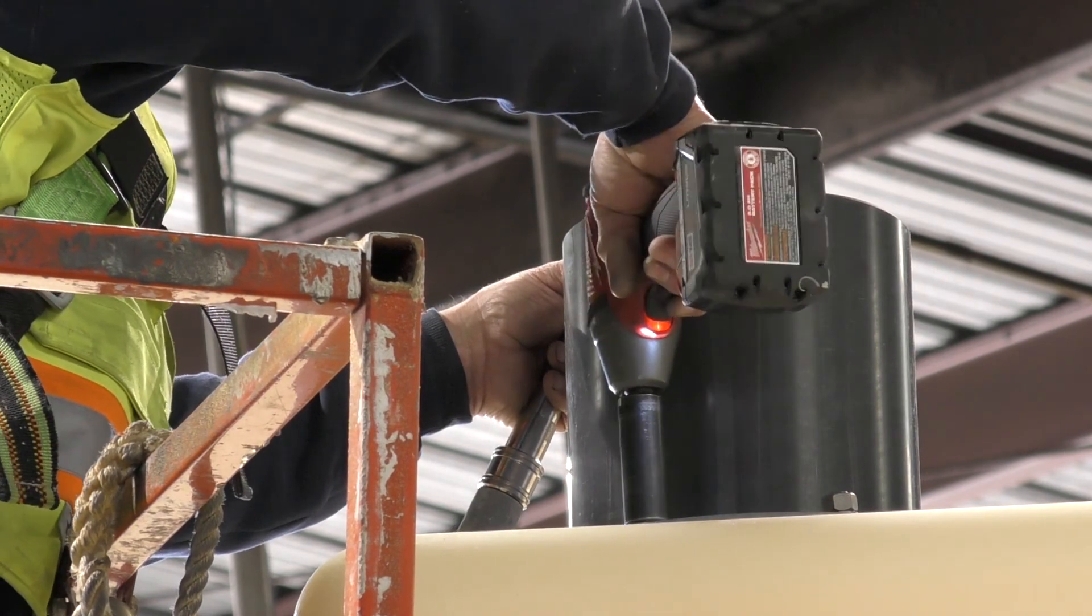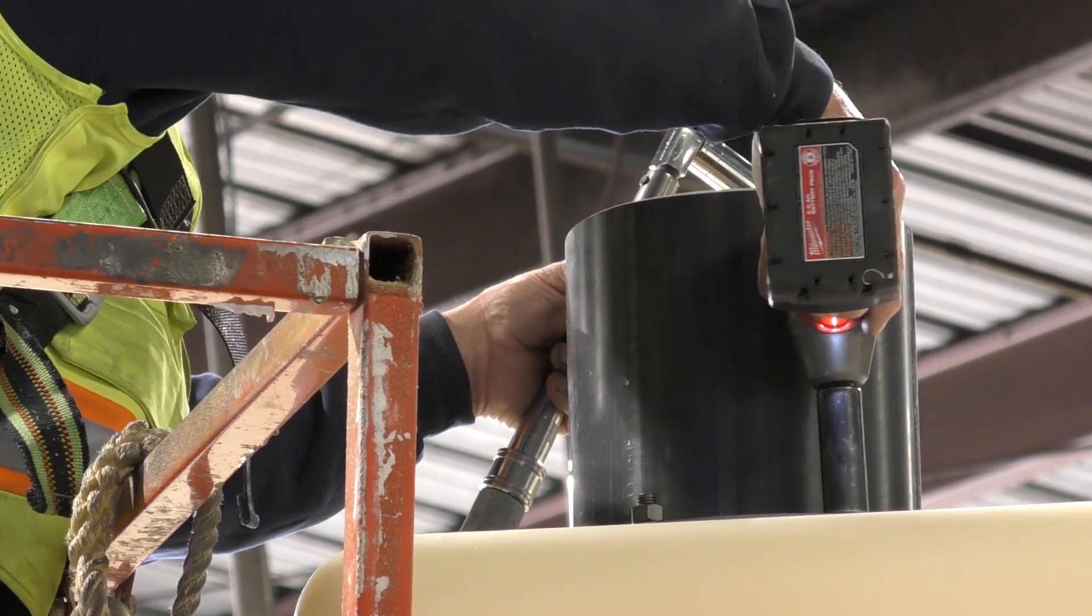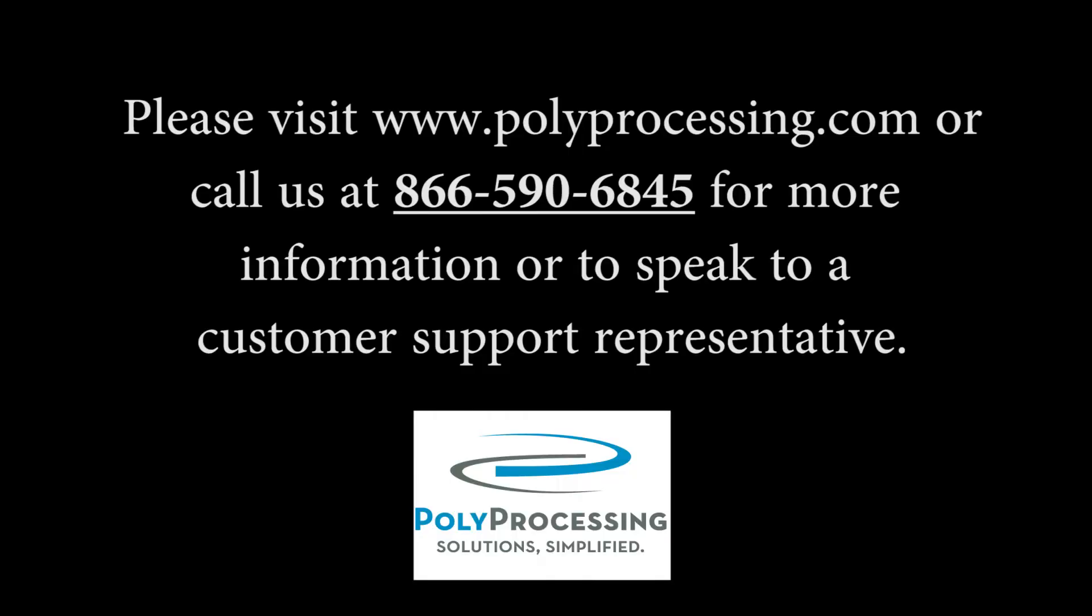Poly Processing customizes every tank order to make sure that we meet the customer's expectations on time, every time. Please visit polyprocessing.com or call us at 866-590-6845 for more information or to speak to a customer support representative.